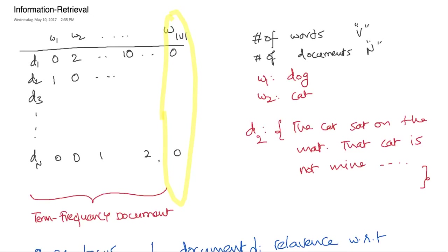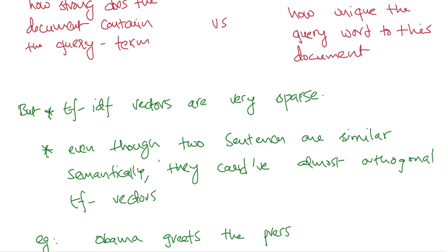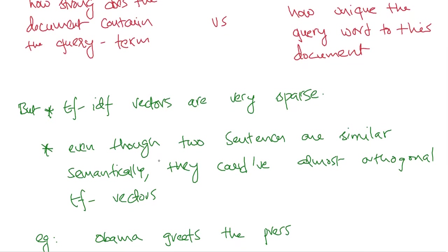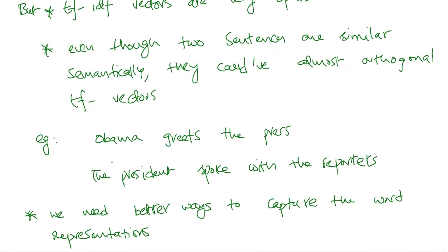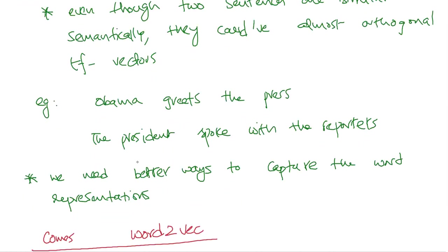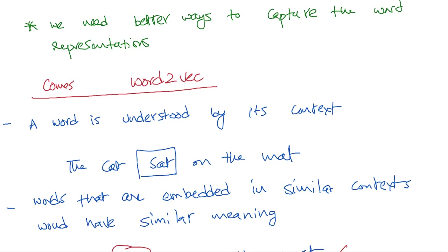The problem with term frequency representations is that they're extremely sparse. Even though two sentences could be semantically similar, because the vector representations are very sparse they could be almost orthogonal. For example, 'Obama greets the press' versus 'the president spoke with the reporters' — semantically these are equivalent: Obama is the president, 'greets' is equivalent to 'spoke,' 'press' means reporters. But looking at the actual word presence, they're completely different. If you simply go by TF-IDF representations, the similarity score between these two will be fairly small.